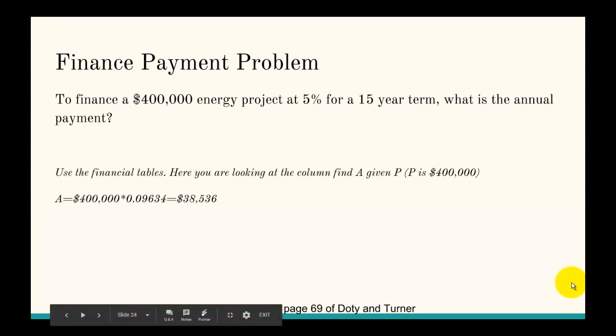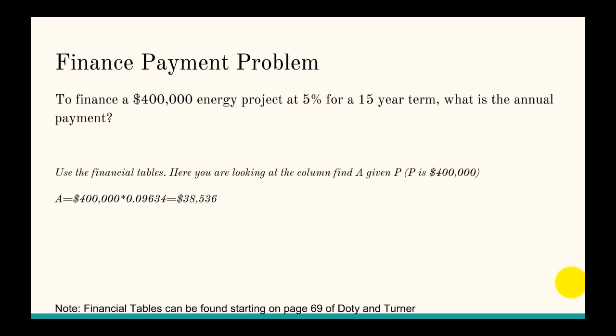The finance payment problem: you're financing a $400,000 energy project at 5% for a 15-year term. What's the annual payment? You're going to use the financial tables, found starting on page 69 of Doty and Turner, and look at the column 'Find A Given P', because A is annuity — these payments occur every year — and P is $400,000, the present value of what you're financing. Go down 15 years in the 5% table, and you find the factor is 0.09634. Multiply that by $400,000 to get your annual payment of $38,536.